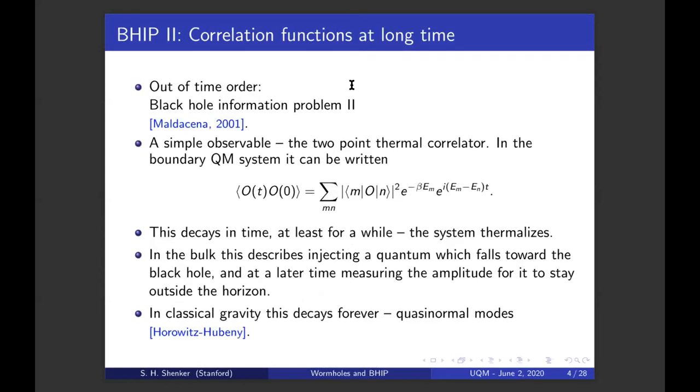So I'm going to go out of time order here. I'm going to talk about the second big class of black hole information problems that's discussed. It's actually still been around for a long time. Maldacena introduced it almost 20 years ago. So a simple observable, the two-point thermal correlator is easy to describe in the boundary quantum system. It's just given by inserting a complete set of eigenstates and eigenvalues, matrix element squared times an oscillating phase of the Boltzmann weight.